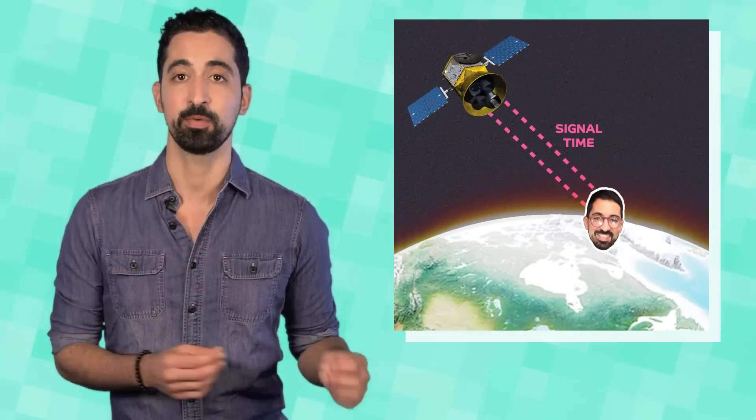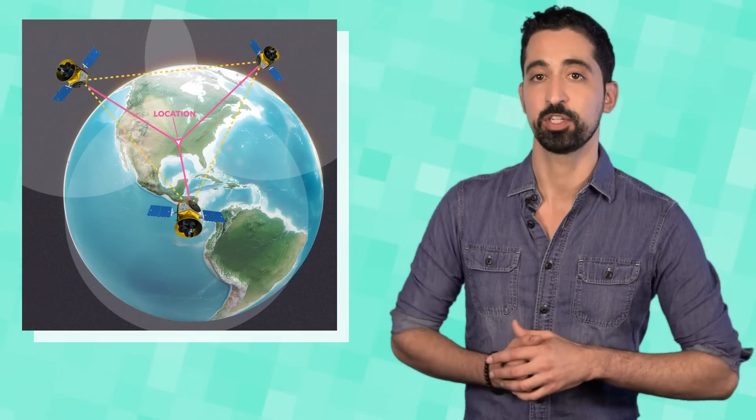You can calculate the distance between yourself and any satellite by comparing the time delay between a radio signal sent by the satellite and the receiver. Because we know radio waves travel at the speed of light, we can calculate the distance from the satellite based on time. Once we have known distances from a point on Earth to three or more satellites, we can find the exact point of intersection of all of the spheres of possible distances from all of the satellites. This position is our position on Earth.